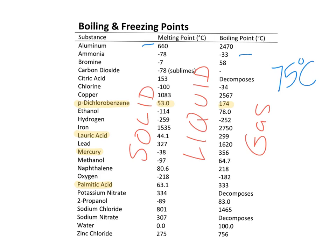Also, 2-propanol would work — it melts at minus 89 and boils at 83. So 75 is pretty close to its boiling point but it's still below, so it would be a liquid. And water, of course, at 75 degrees would be liquid because that's above its freezing point of 0 and below its boiling point of 100 degrees.